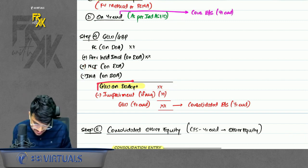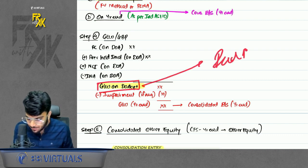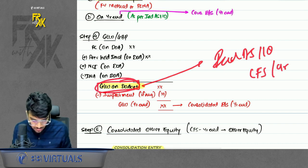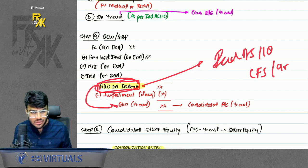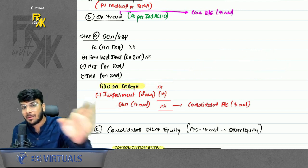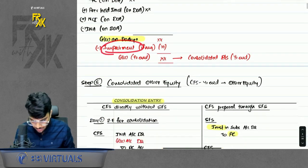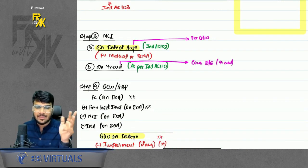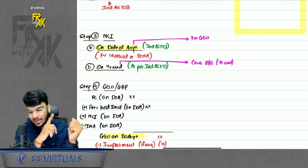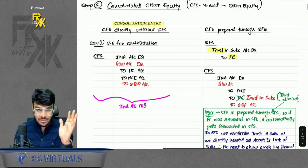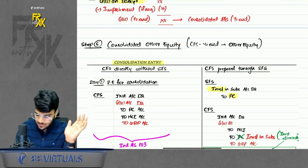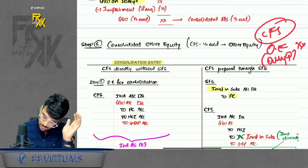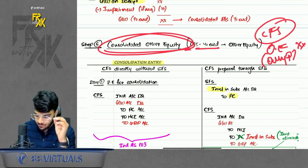In IND AS 110 we prepare CFS on year end, so can the goodwill amount change from date of acquisition to year end? Yes — not by amortization, as goodwill is never amortized; it is only tested for impairment annually. So if there is any impairment, reduce accordingly. The four steps are: PC, INA, NCI, Goodwill. Step 5 is Consolidated Other Equity, where only the parent's other equity is taken, with some adjustments.